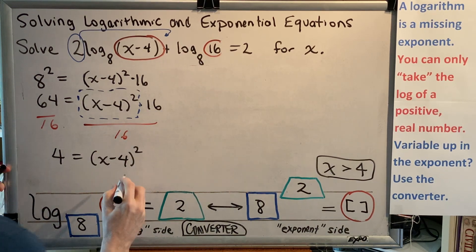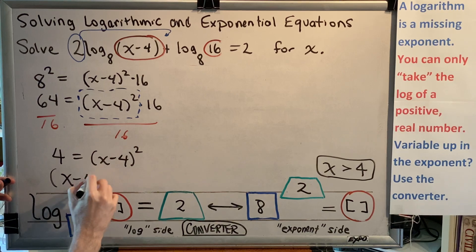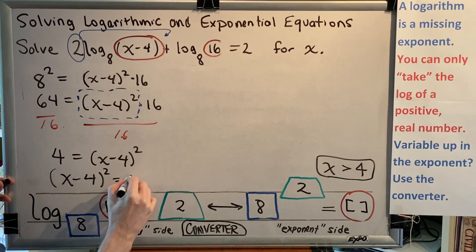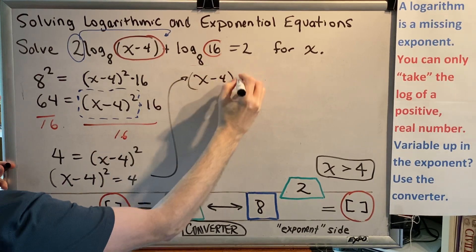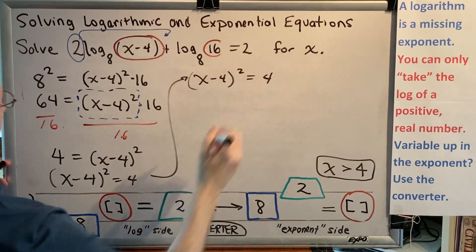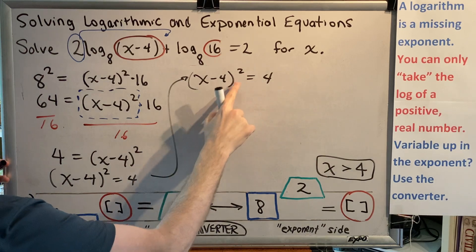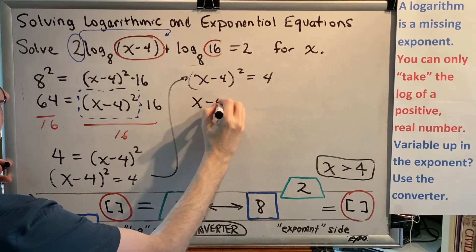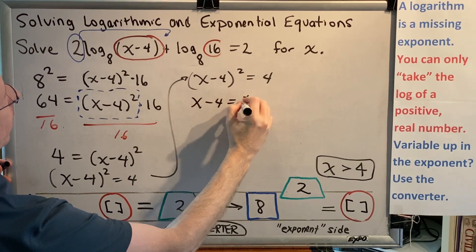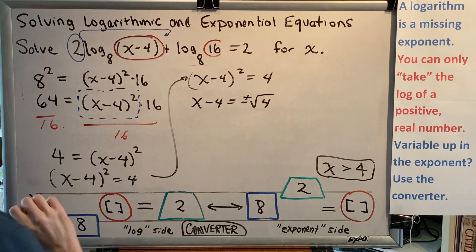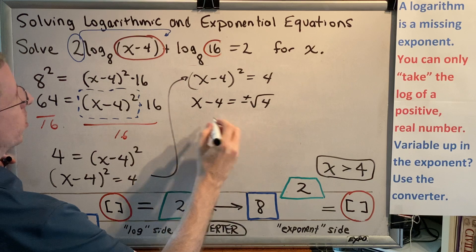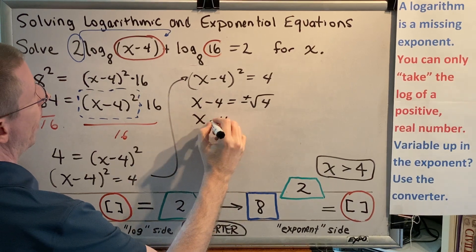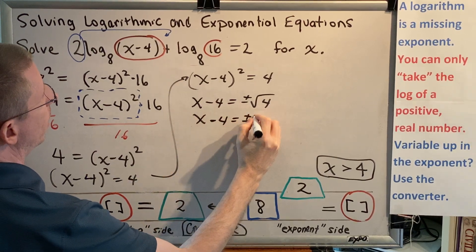Notice these 16s over here on the right are canceling. And now I can use my square root property. Now, most of the time when you use the square root property, the part being squared is on the left. So I'm going to move it to the left. The square root property says that you can drop the square and the parentheses on the left side if you just put plus or minus square root on the right. So we get x minus 4 equals plus or minus the principal square root of 4. The principal square root of 4 is 2. So we get x minus 4 equals plus or minus 2.